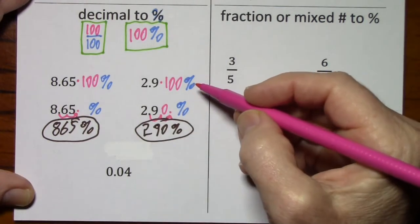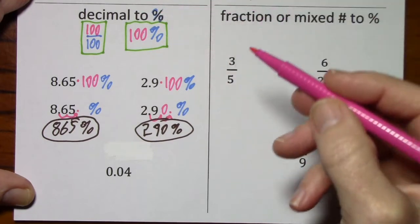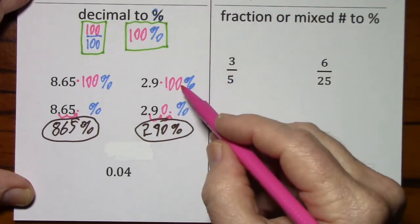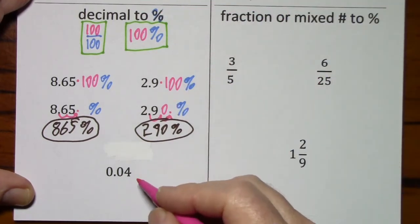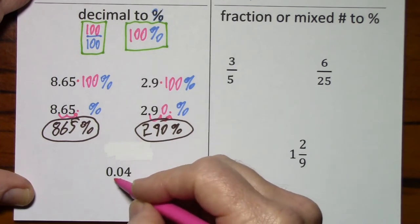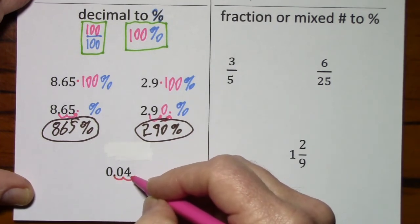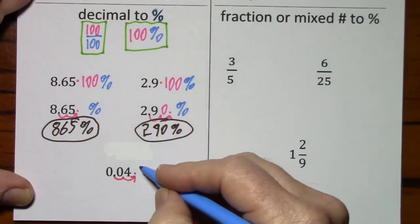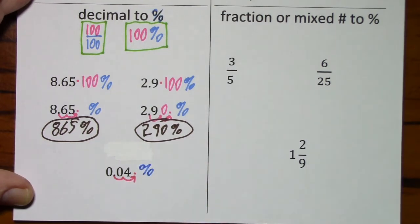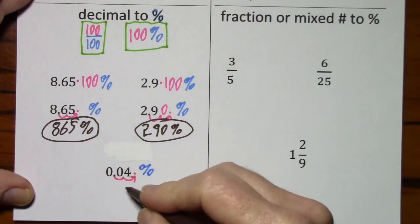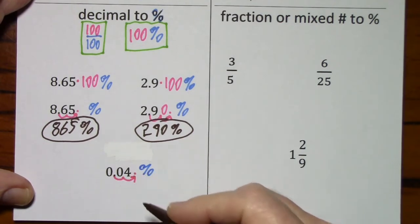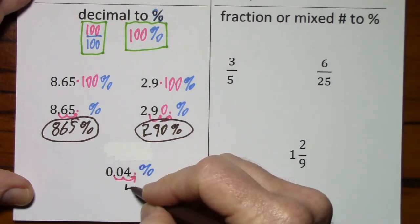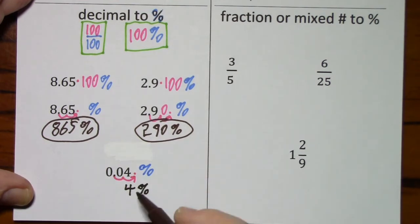So working from decimal to percent, you don't always have to write this step. If you're going to put in a percent sign, move the decimal two places towards the percent sign, and then put in the percent sign. So I can drop that decimal actually. The final answer is just 4%.